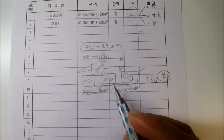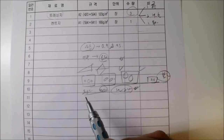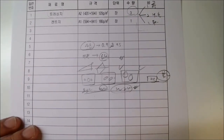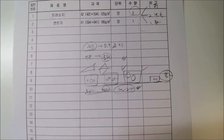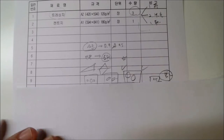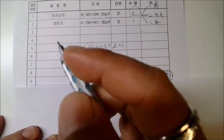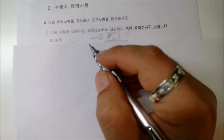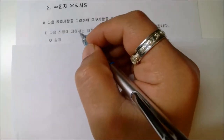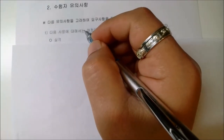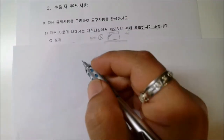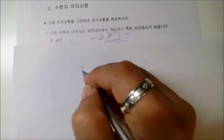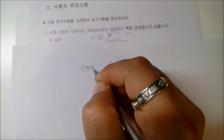문제지를 뒤집어서 손을 대고 글자를 적으면 종이에 번지지 않습니다. 실내건축기능사 필기는 기출문제 6회분만 풀고 틀린 문제를 반복하면 충분히 합격할 수 있습니다. CAD도 필기 문제가 비슷하니 같이 준비하세요.